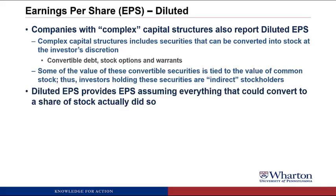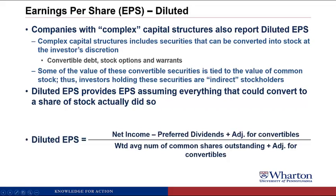Diluted EPS gives you an EPS number assuming that everything that could convert to a share of stock actually did convert. The definition is: take net income minus preferred dividends, then add an adjustment for convertibles — what would happen if they converted to common stock — and in the denominator take the weighted average common shares outstanding, again adjusted for the effect of these convertibles assuming everything that could convert would actually do so.